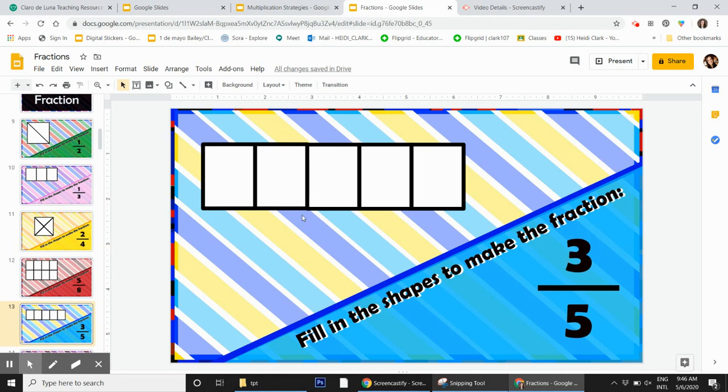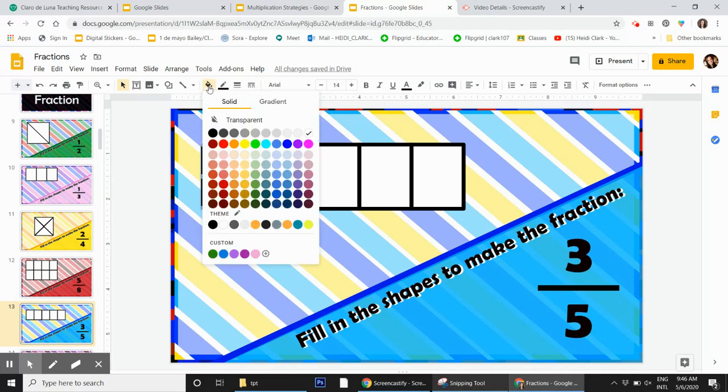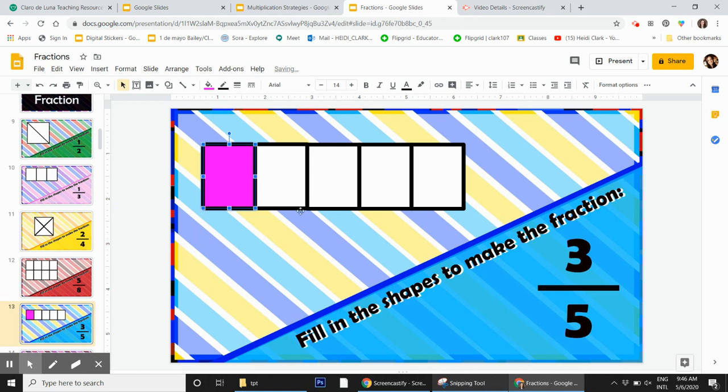So here's how you do that. Click on this rectangle, go up to the paint bucket, you can choose any color you want and click and that's it.